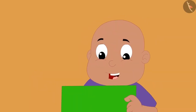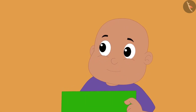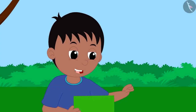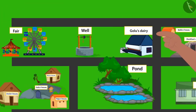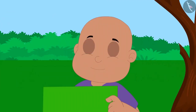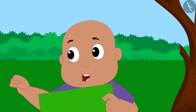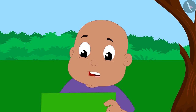Raju says, how interesting is this map! With this, we can find the way to any place in our village. Raju points out that the house of Khan is towards the south of Bablu's house. Bablu asks how Raju found that out, and what 'towards the south' means.